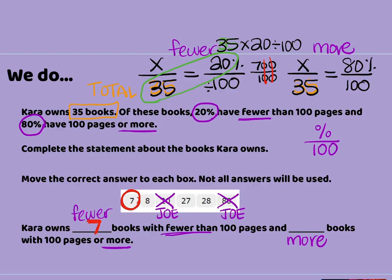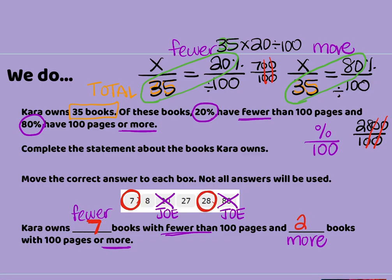Then we're going to do the same thing on this side — solve for the 80%, dividing by that hundred. So 80 times 35 is 2,800. We have 2,800 and again we're dividing by a hundred. Again we get to cross off those zeros, which is so nice, and we have 28 left. So we had 28 books with more than a hundred pages.